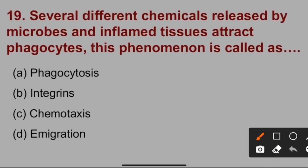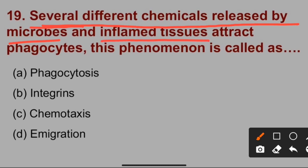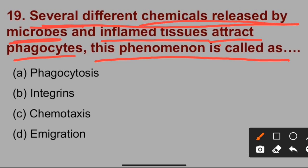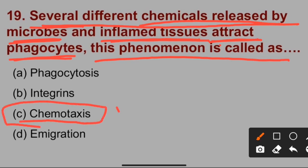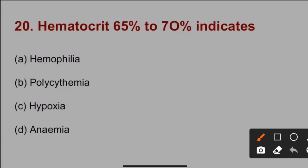Question number 19: Several different chemicals released by microbes and inflamed tissue attract phagocytes. This phenomenon is called chemotaxis. Option C is correct.